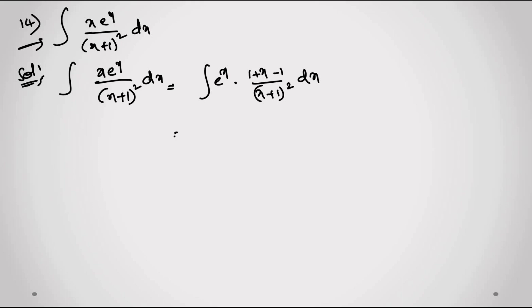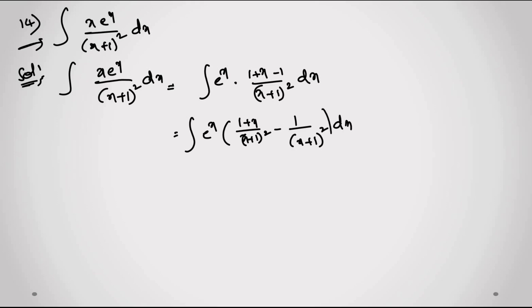I will add one and minus one here so it becomes zero. It will become e^x into (1+x) divided by (x+1)². I will separate this: one by (x+1)² comes into the integral. For this, (x+1) gets cancelled with (x+1), so what remains is one by (x+1).